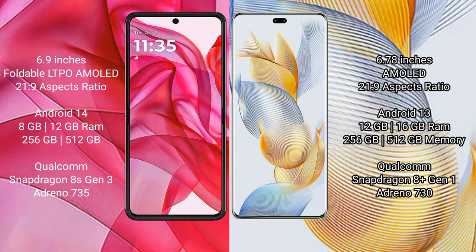Motorola Razr 50 Ultra comes with 8GB or 12GB RAM and 256GB or 512GB internal storage, with a Qualcomm Snapdragon 8 Gen 3 processor and Adreno 735 GPU. Honor 90 Pro comes with 12GB or 16GB RAM and 256GB or 512GB internal storage, with a Qualcomm Snapdragon 8 Gen 1 processor and Adreno 730 GPU.